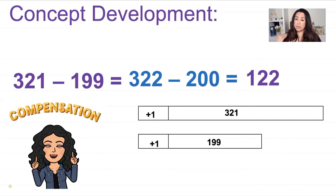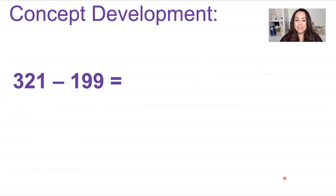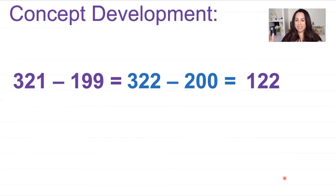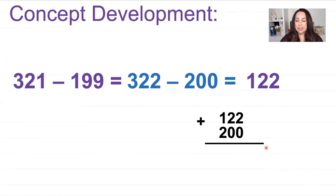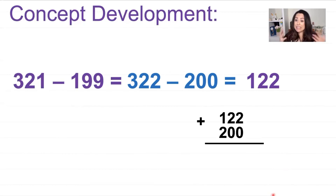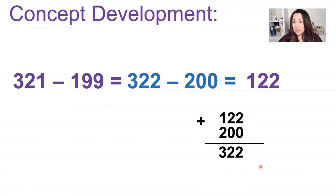Remember you can also check your problem with addition. Looking at this problem: 322 take away 200 equals 122. It's kind of like a fact family. If I take my answer of 122 and add it to 200 — the easiest addend to use — my answer is still 322. As long as all those numbers work together, you can use this strategy.